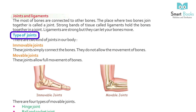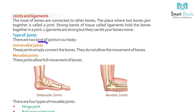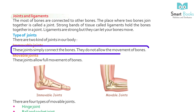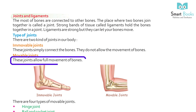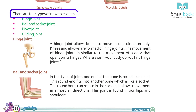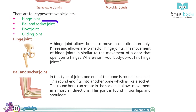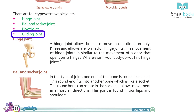Types of Joints: there are two kinds of joints in our body. Immovable joints simply connect the bones and do not allow the movement of bones. Moveable joints allow full movement of bones. There are four types of movable joints: hinge joint, ball and socket joint, pivot joint, and gliding joint.